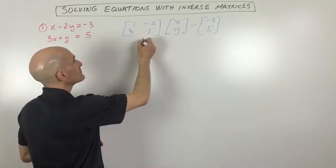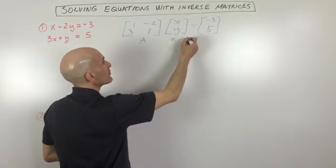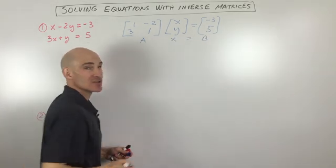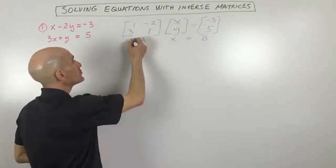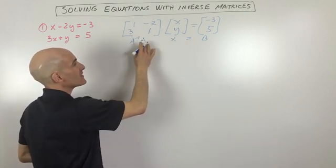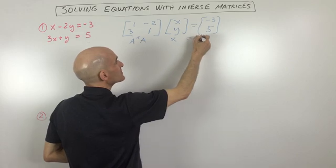Now, you can think of this as matrix A, variable matrix X, solution matrix B. If we want to get the variable by itself, what we want to do is multiply by the inverse of this matrix to both sides of the equation.